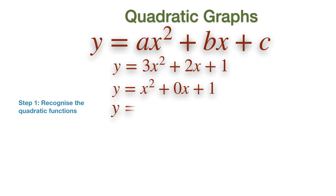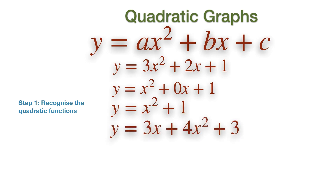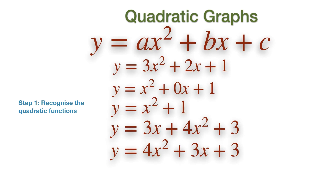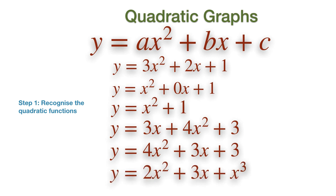Y equal to X squared plus 0X plus 1 can be simply written as Y equal to X squared plus 1, which is also a quadratic equation. Y equals to 3X plus 4X squared plus 3 is also quadratic, as it can be written as Y equals to 4X squared plus 3X plus 3, which is of the form Y equal to AX squared plus BX plus C. However, Y equals to 2X squared plus 3X plus X cubed is not a quadratic function, as the highest power of X is 3.